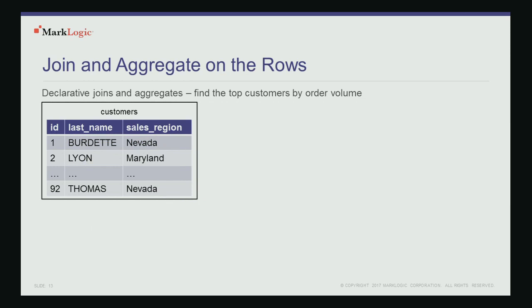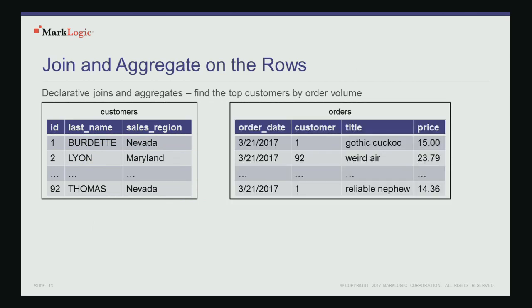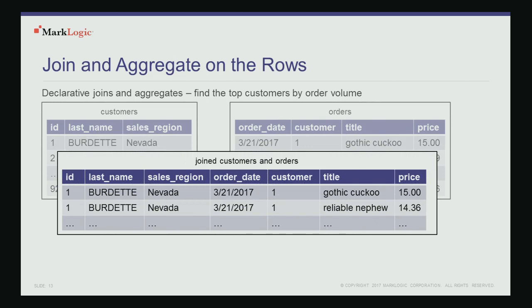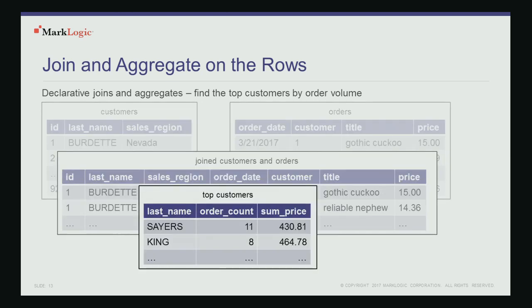Now that we have customer rows and order rows, we can answer which customer placed the most orders. We do a relational join on the rows, group on the customers, and calculate aggregates such as counts and sums over the order detail to find out which customer placed the most orders.